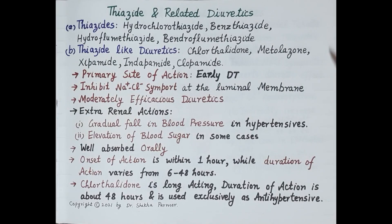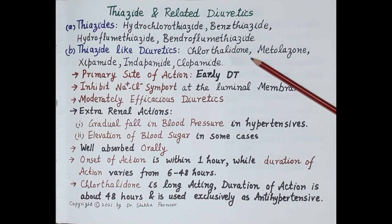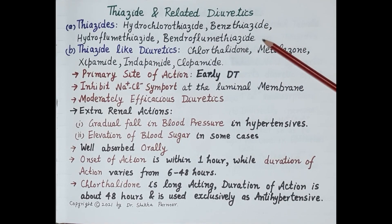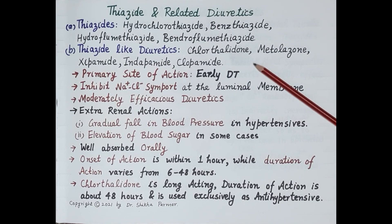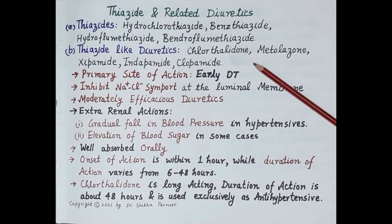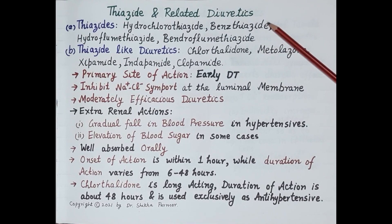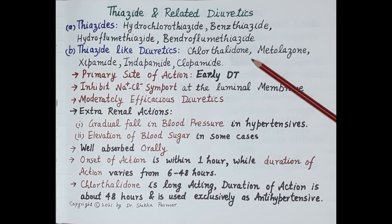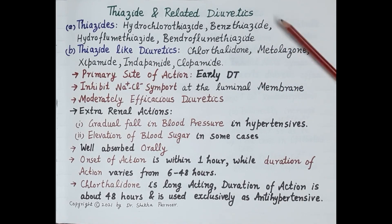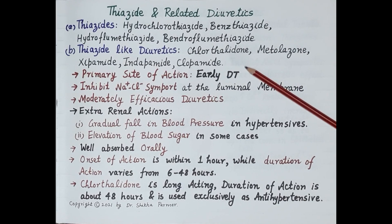Thiazide and related diuretics are classified into thiazides — including hydrochlorothiazide, benzthiazide, hydroflumethiazide, and bendroflumethiazide — and thiazide-like diuretics. Thiazide-like diuretics do not possess the thiazide chemical structure but have similar mechanism of action and pharmacology. They include chlorthalidone, metolazone, xipamide, indapamide, and clopamide. The most commonly used are hydrochlorothiazide, chlorthalidone, and indapamide.